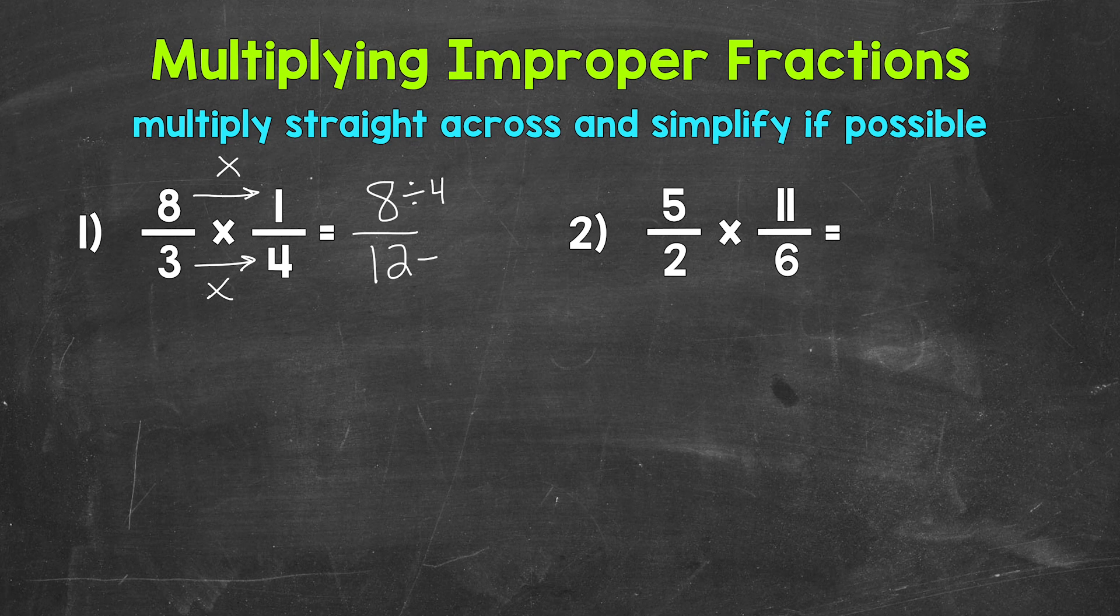8 divided by 4 and 12 divided by 4. 8 divided by 4 is 2. 12 divided by 4 is 3. 2 thirds is in simplest form, so this is our final simplified answer. 2 thirds.